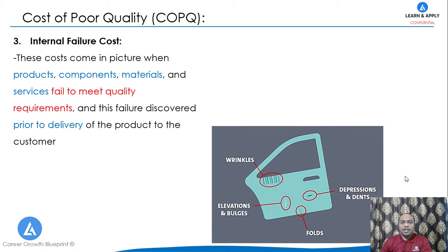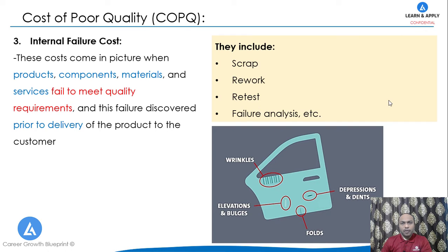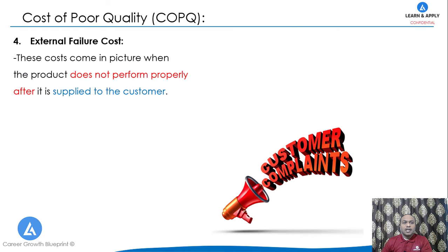The third cost of poor quality is internal failure cost. These costs arise when products, components, materials, and services fail to meet the quality requirements of customers, and this failure is discovered prior to delivery of the product to the customer. For example, this category includes costs associated with scrap, rework, retest, as well as failure analysis.